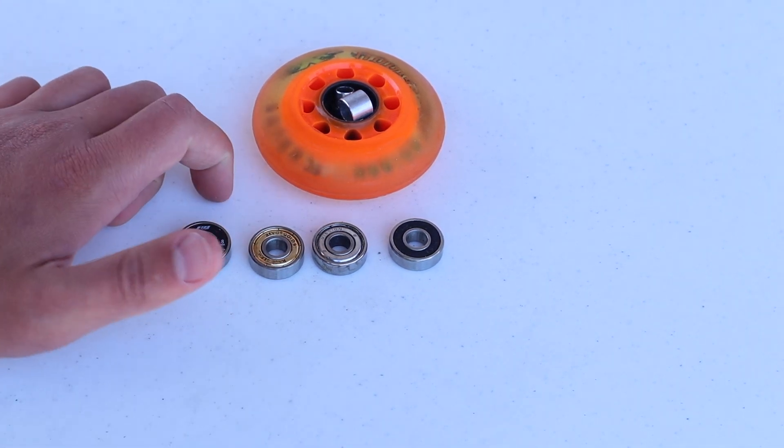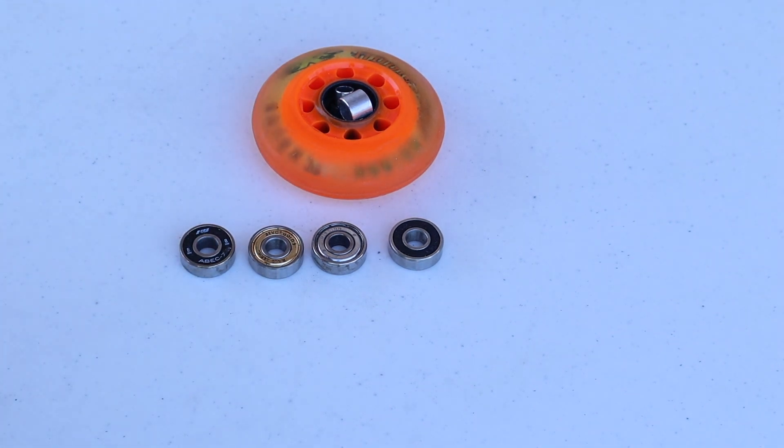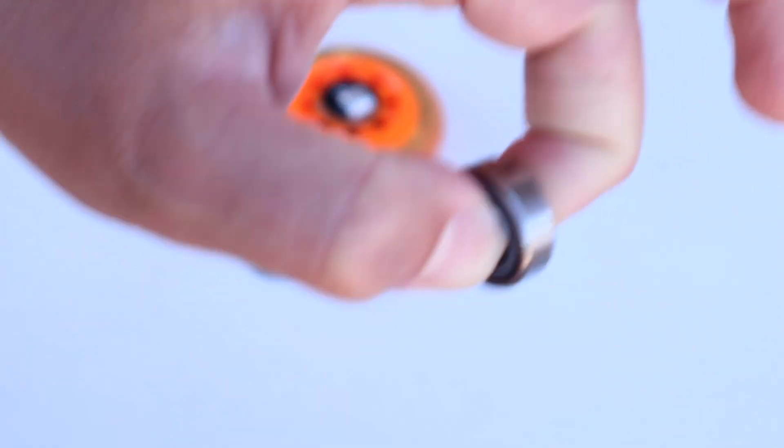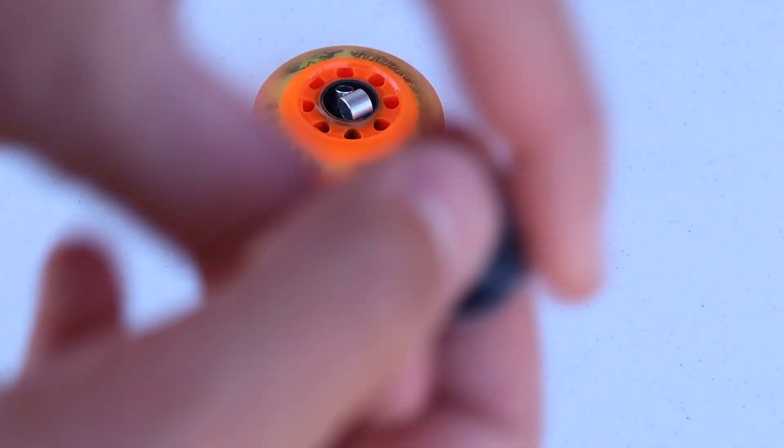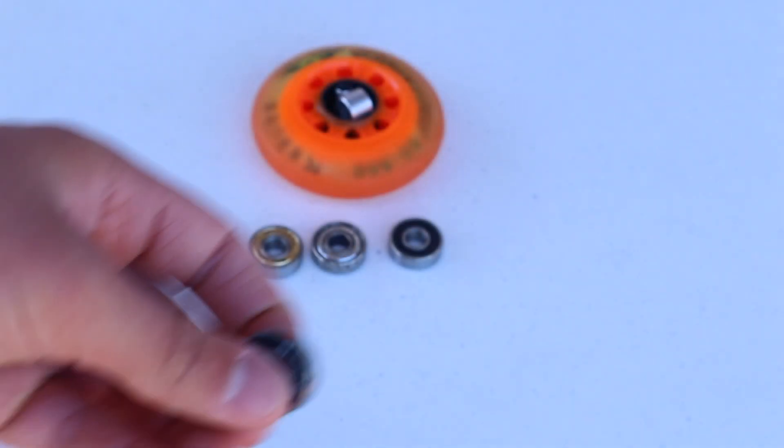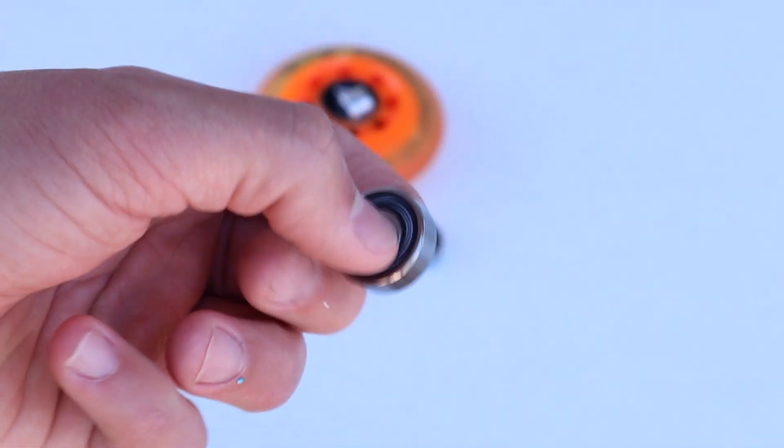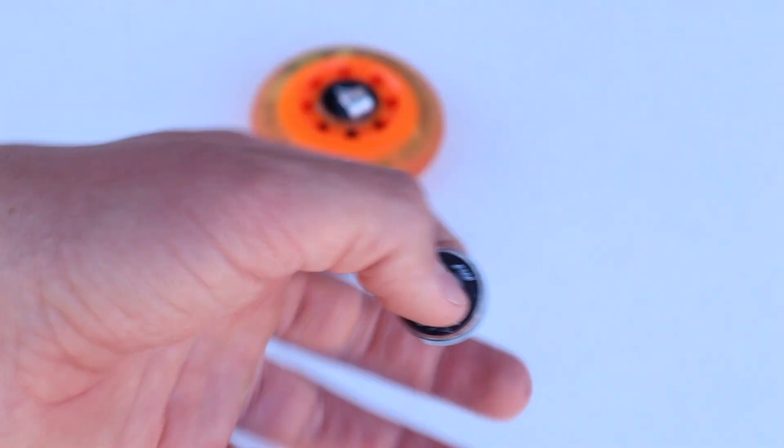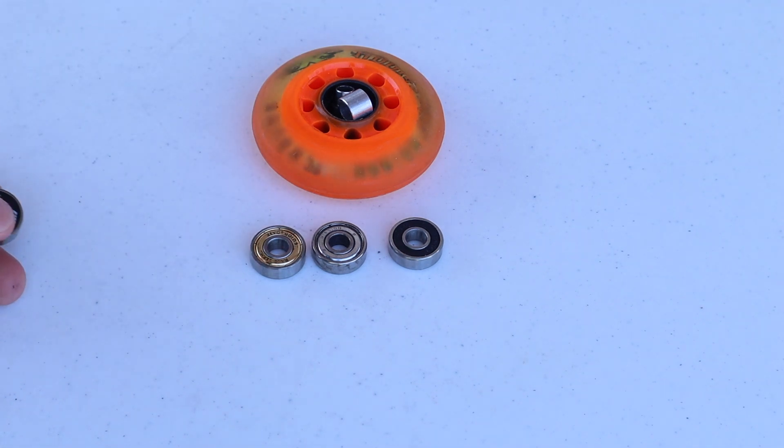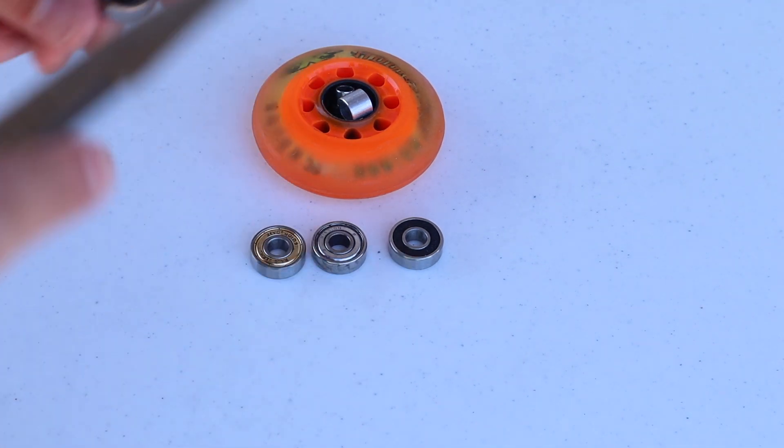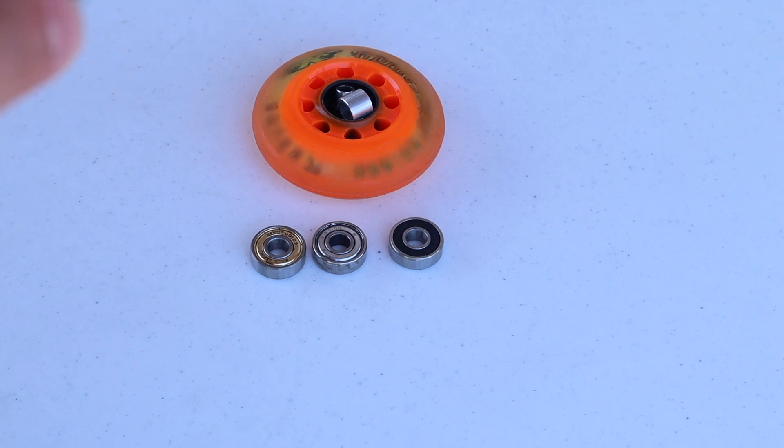Then it goes up to ABEC 7, which is pretty much your medium type of quality bearing. It's closer to ABEC 9 than ABEC 5. They spin really good, they'll last you a really long time. Actually, let me take one of these sleeves off and I can show you guys what it actually looks like inside of that bearing.